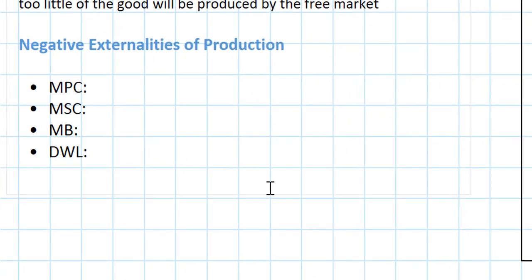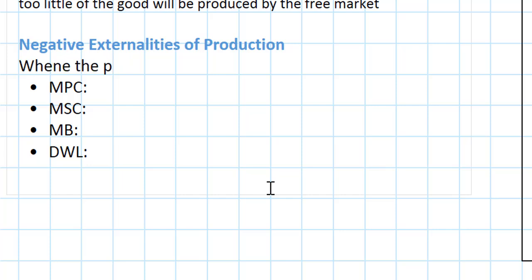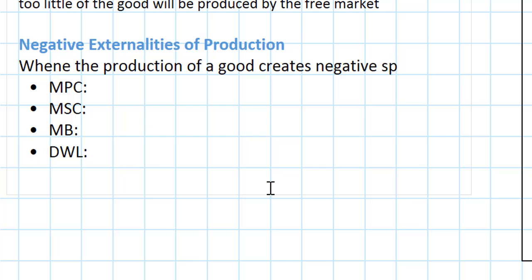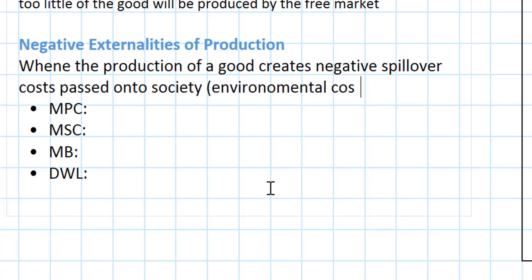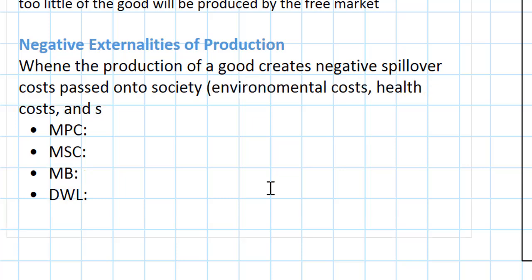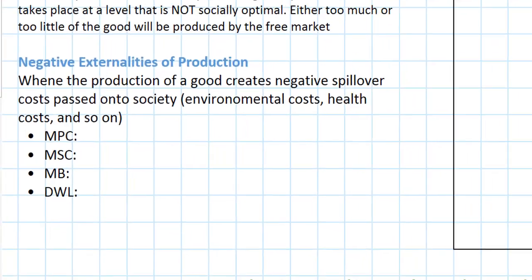A negative production externality is when the production of a good creates negative spillover costs passed on to society. These could be environmental costs, health costs, and so on. In the case of fracking, we've just seen several images demonstrating some of these potential costs of this type of gas production.